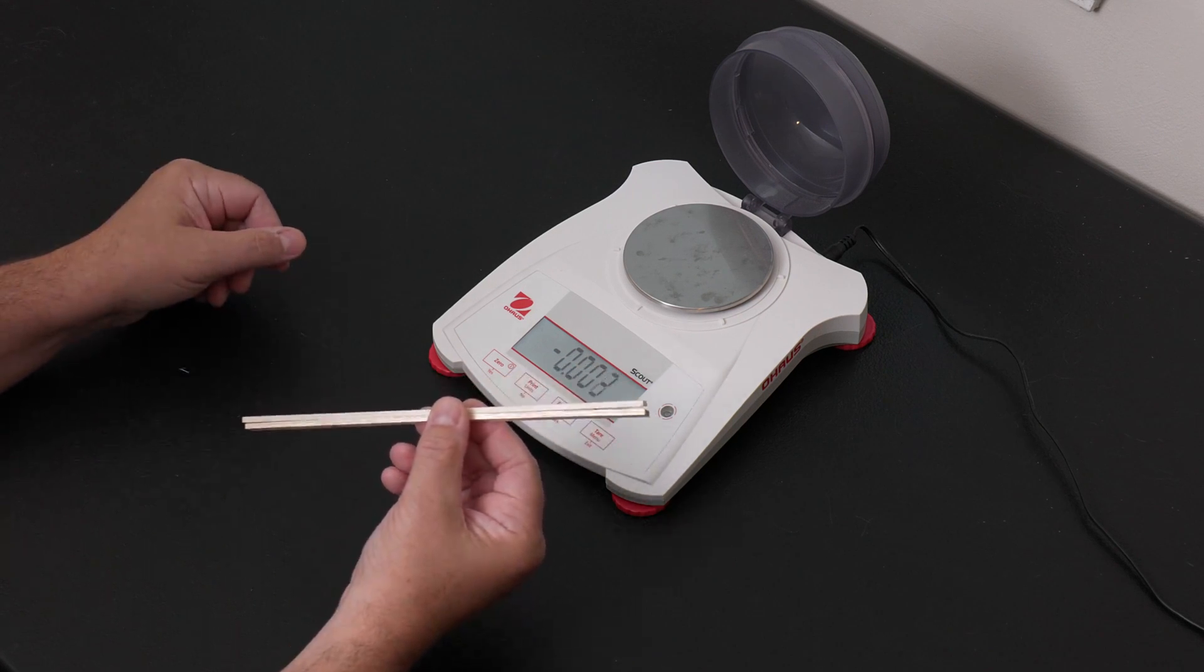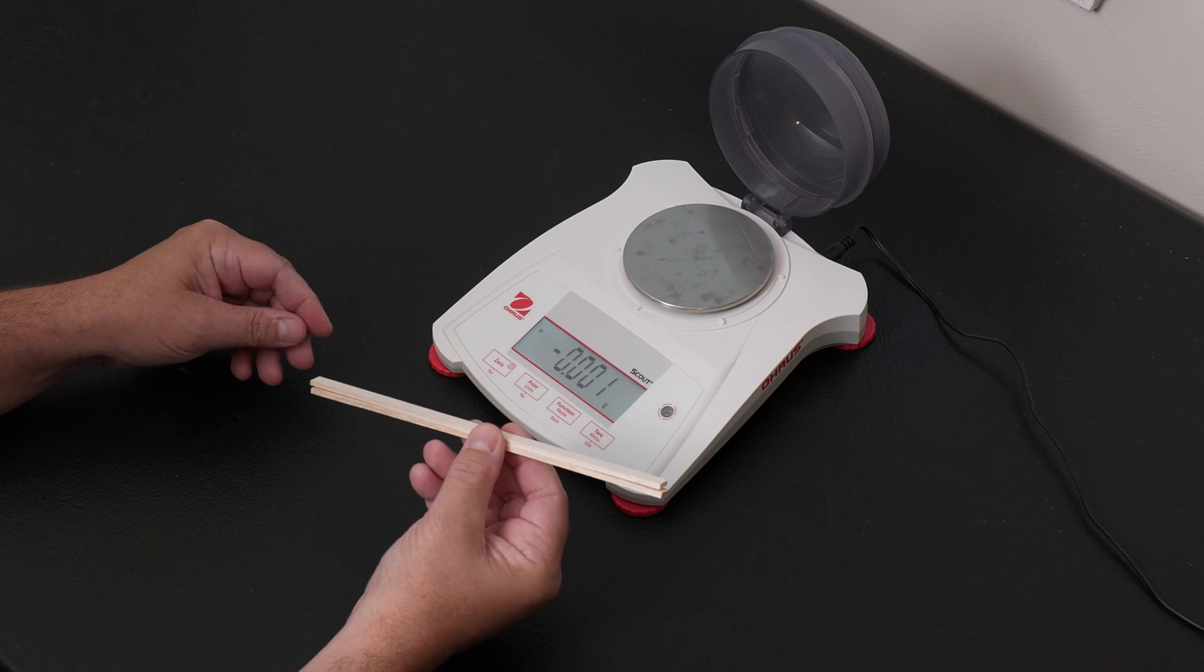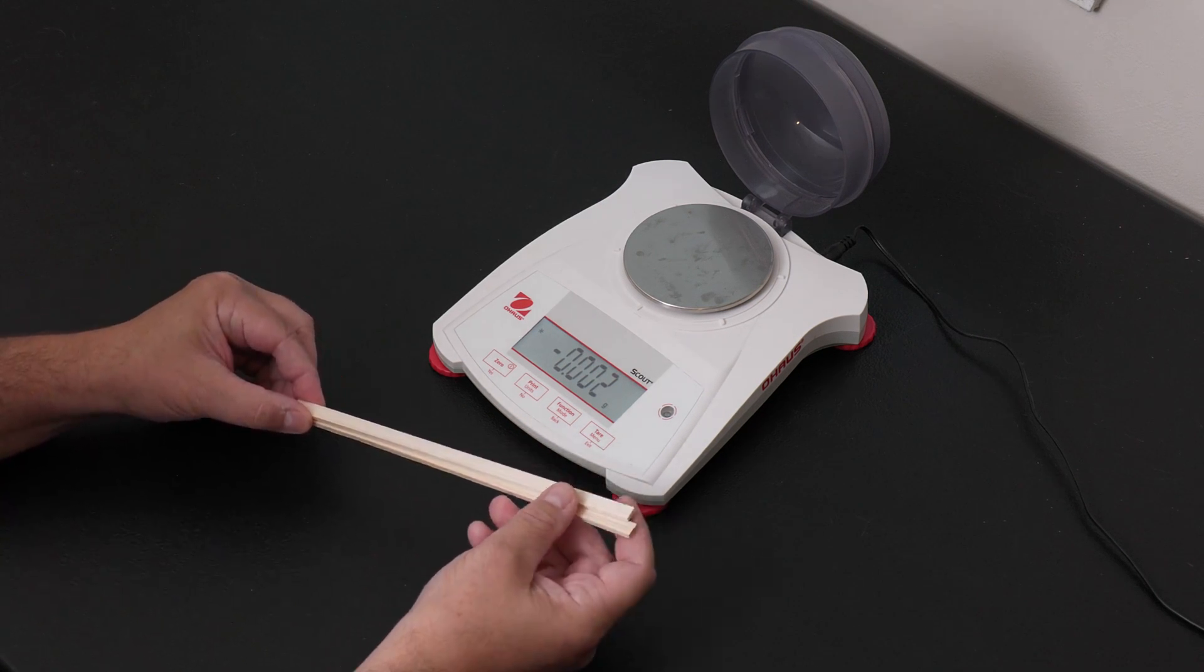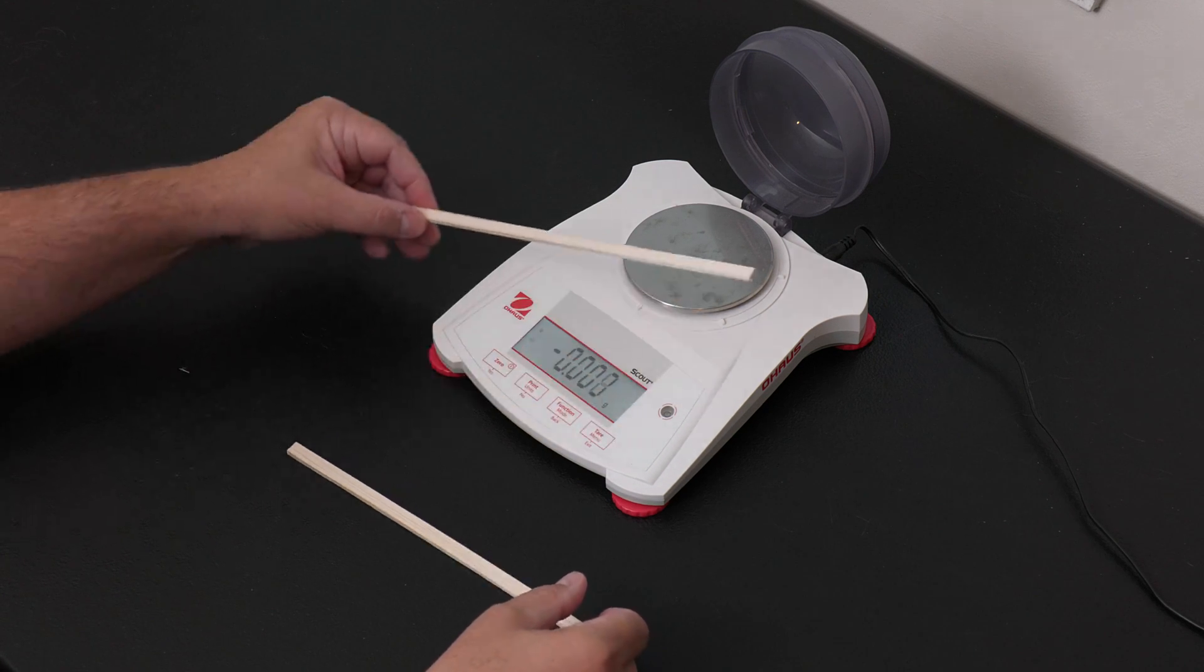For example, take a look at these two pieces of balsa. They are the exact same dimensions, same width, height, and thickness, but let's put them on the scale to see how different they really are.